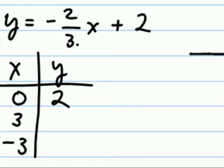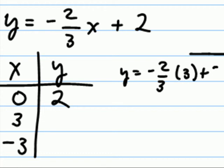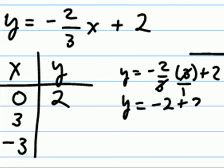If x is three, we can verify y equals a negative two-thirds times three plus two. The threes cancel, leaving us with negative two plus two. Y becomes zero.